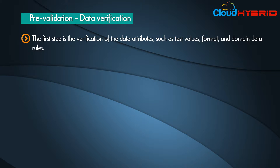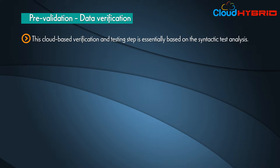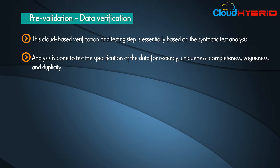The first step is the verification of data attributes such as test values, format, and domain data rules. Attributes are verified based on their testable attributes and complementarity with the test results specification. This cloud-based verification and testing step is essentially based on syntactic test analysis, done to test the specification of the data.